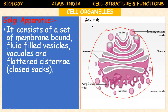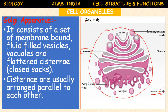Its final structure, observed under the electron microscope, consists of a set of membrane-bound fluid-filled vesicles called vacuoles — specifically secretory vesicles — and flattened cisternae. These are the two important structures: vesicles and cisternae. The cisternae are usually arranged parallel to each other, one over the other.